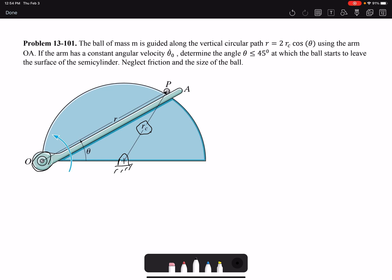If the arm has a constant angular velocity theta dot 0, that means theta dot is constant and the value is theta dot 0, so theta double dot would be 0.